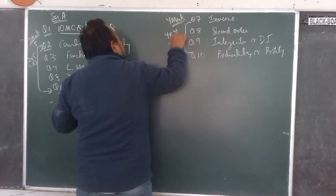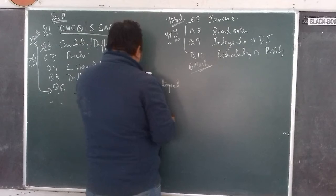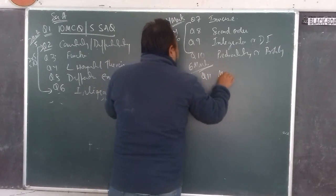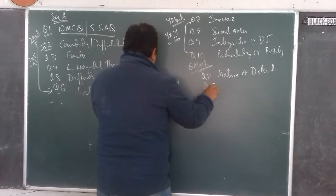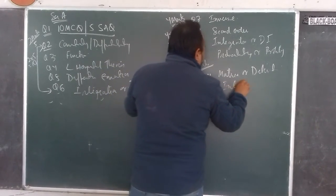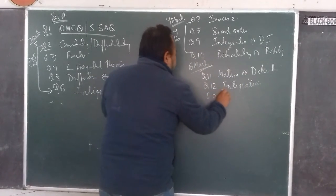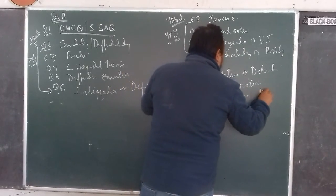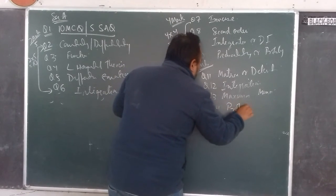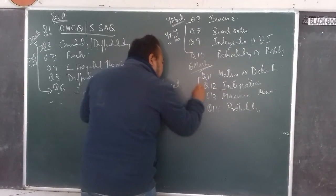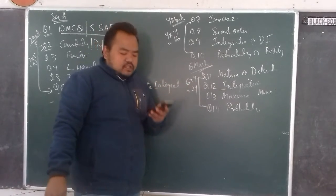For the 6-mark long answer questions: question number 11 will be matrix or determinant — there is a choice. Question number 12 will be integration — a difficult question. Question number 13 will be maxima and minima. Question number 14 will be probability. So 6 × 4 = 24 marks for this stage.